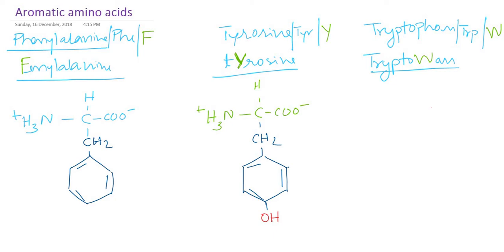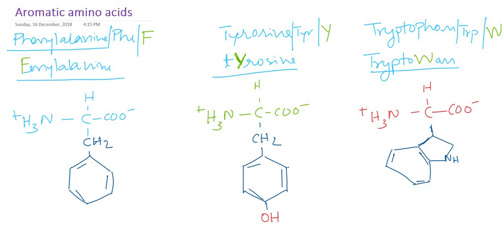For tryptophan, it also contains a carboxyl group, an amino group, hydrogen, and the side chain is called the indole nucleus. The indole group contains an NH and a benzene ring fused together. Phenylalanine, tyrosine, and tryptophan are the three aromatic amino acids. They differ with respect to their side chain, but all three contain a benzene ring.